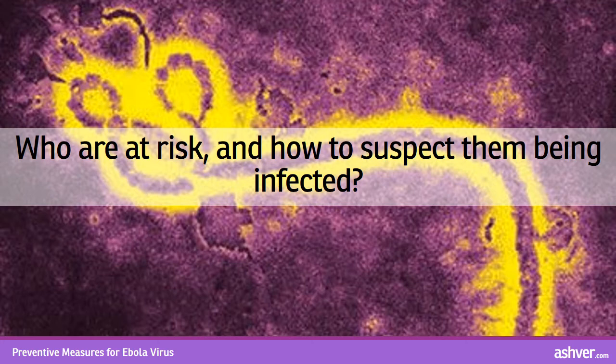The rash spreads centrifugally to the extremities. In severely ill patients, chest pain, cough, gastric upset, bleeding from eyes and other orifices, bruising, and internal bleeding can occur. The worst complications include sepsis and multi-organ failure.